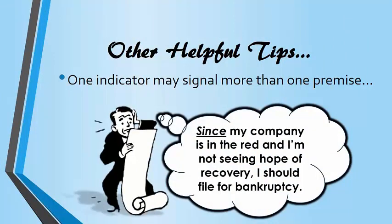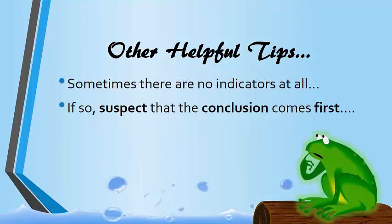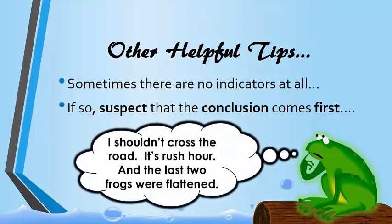There are some other helpful tips when you're dealing with paragraphs and conversations in everyday life. One indicator word may signal more than one premise. For example, 'since my company is in the red and I'm not seeing any hope of recovery, I should file for bankruptcy.' You can divide this into three statements: my company is in the red; I'm not seeing any hope of recovery; and the conclusion, I should file for bankruptcy. Two premises were given for that conclusion. Also, sometimes you'll find that there are no indicators in a passage — if that happens, suspect the conclusion was offered up front. For example, 'I shouldn't cross the road. It's rush hour, and the last two frogs were flattened.' No conclusion or premise indicators here, but the conclusion, I shouldn't cross the road, receives support from two other statements.